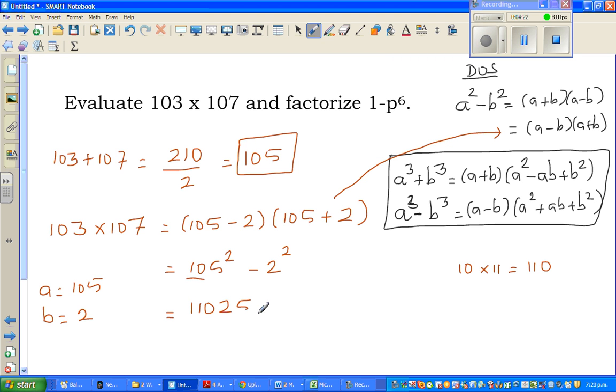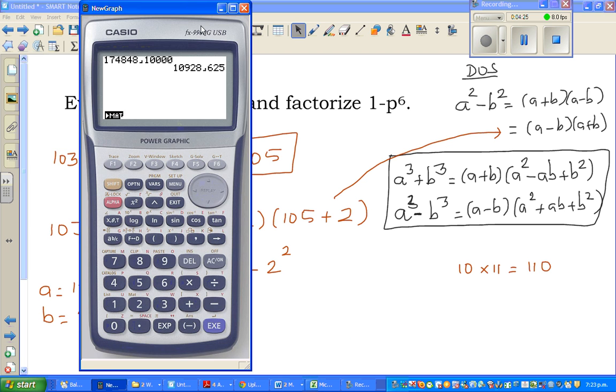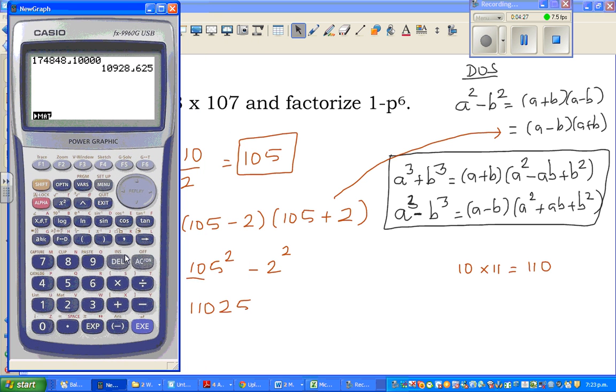110. So this is my calculator. So if you go 105 squared is 11,025.